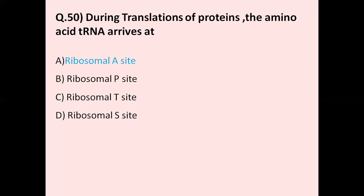Question number 50: During translation of proteins, the amino acid tRNA arrives at — option A ribosomal A site, option B ribosomal P site, option C ribosomal T site, option D ribosomal E site. The correct answer is option A, ribosomal A site.